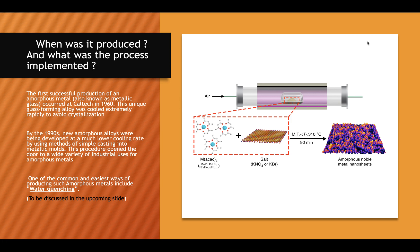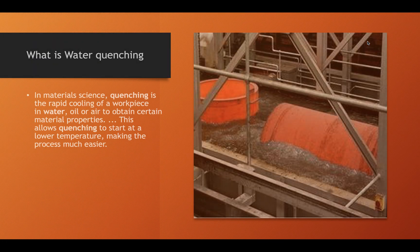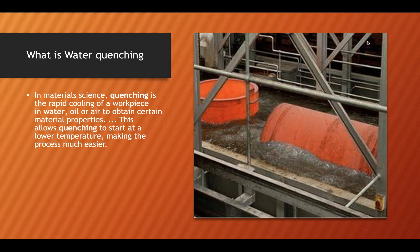Now I'll be discussing the water quenching process in more detail. In materials science, quenching is the rapid cooling of a workpiece in water, oil, or air to obtain certain material properties. This allows quenching to start at a lower temperature, making the process much easier and faster. However, the time for the object to be cooled varies depending on whether we're using water, oil, or air.